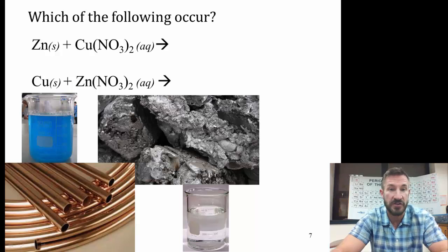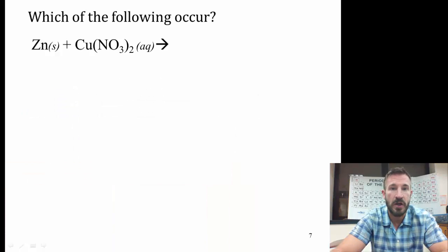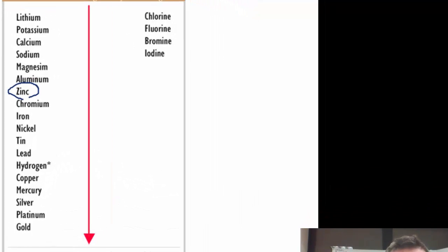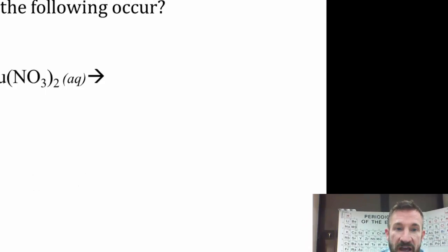What we're going to do is go back to our activity series that we saw before. And in our activity series, if we compare zinc, there's zinc, and copper is down here. So since copper is less reactive, zinc can displace copper in a compound, but copper cannot displace zinc.